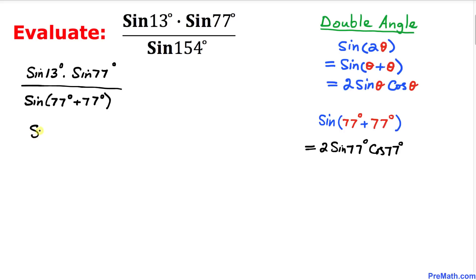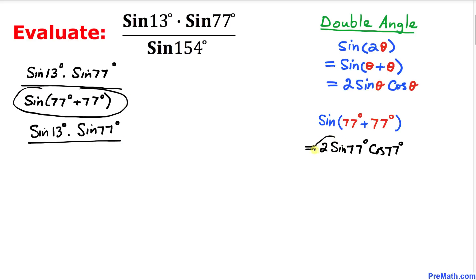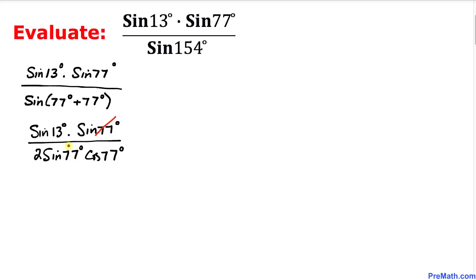Let's revert back to our original problem. On the numerator we have sine of 13 degrees times sine of 77 degrees, and in the denominator we replace sine of 154 degrees with 2 sine of 77 degrees times cosine of 77 degrees. The sine of 77 degrees cancels out, leaving us with sine of 13 degrees divided by 2 cosine of 77 degrees.